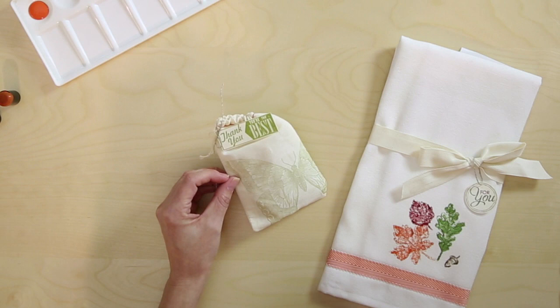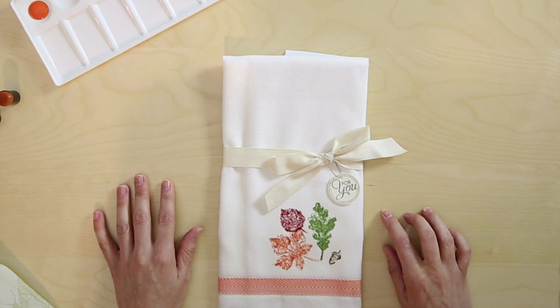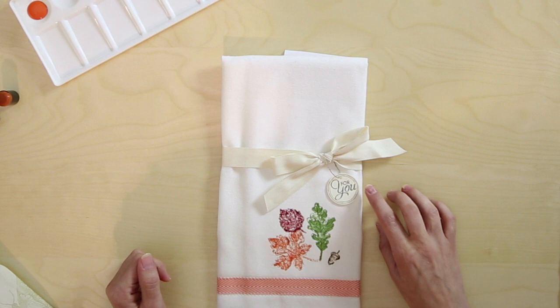Today we're going to be using acrylic paints, and you can find them at your local craft store. I recommend bringing swatches of cardstock with you so you can find paints that coordinate with our Stampin' Up! color palette. Then you'll be able to add embellishments like we've done on the towel with our Tangerine Tango ribbon and stamped tag.